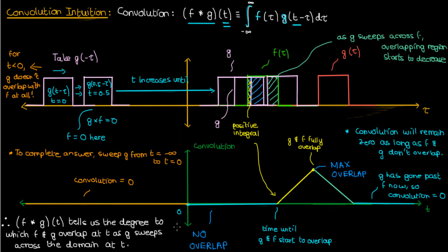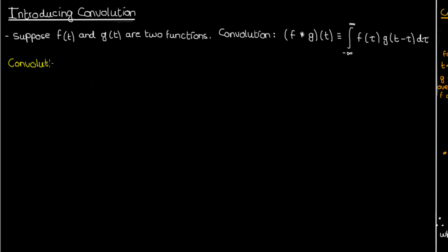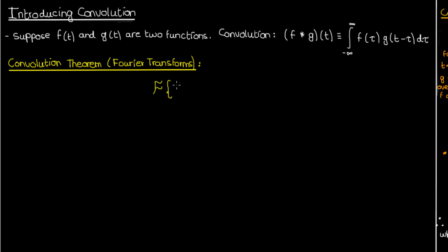You can extend this intuition to any functions f and g — I invite you to draw the convolution of two more complicated functions. I specifically chose box functions here because they're relatively simple to understand. Hopefully that explanation wasn't too convoluted! Let's move on to proving the convolution theorem for Fourier transforms. The convolution theorem states that the Fourier transform of the convolution of two functions is the product of the Fourier transforms of the individual functions — an incredibly useful theorem for solving differential equations by Fourier transforms.